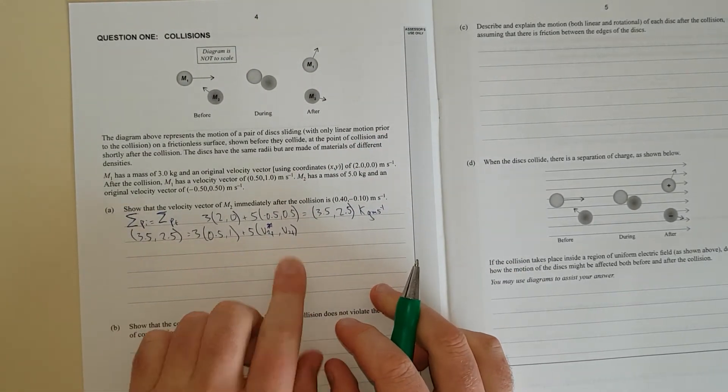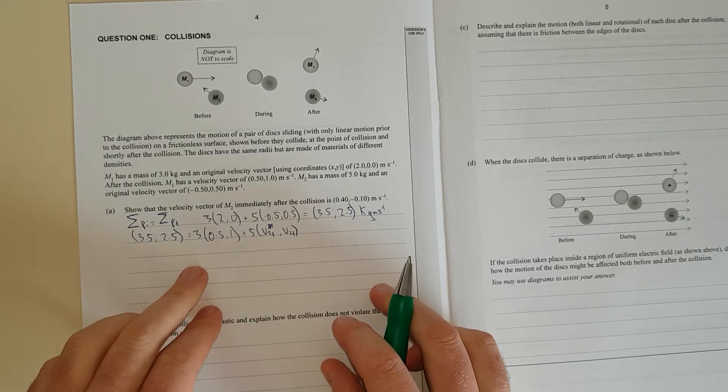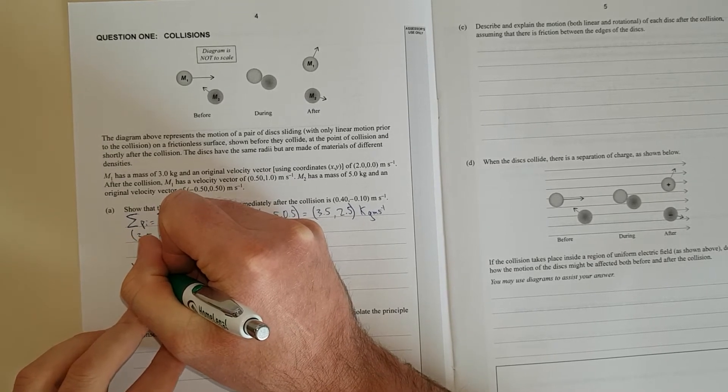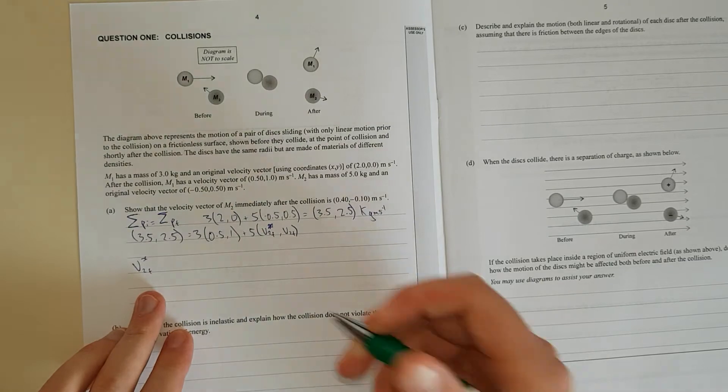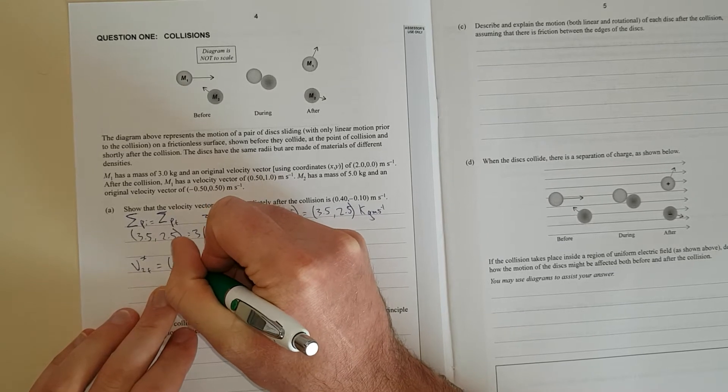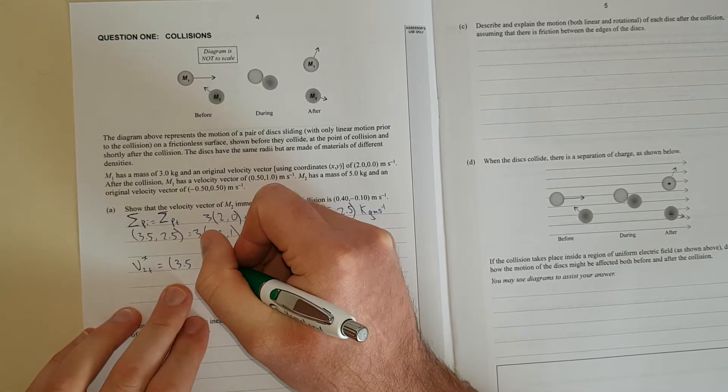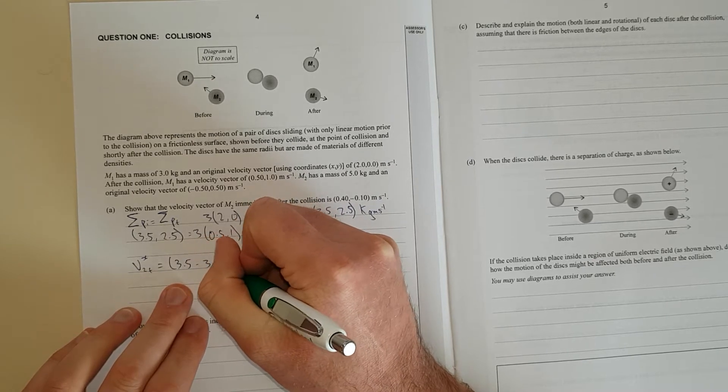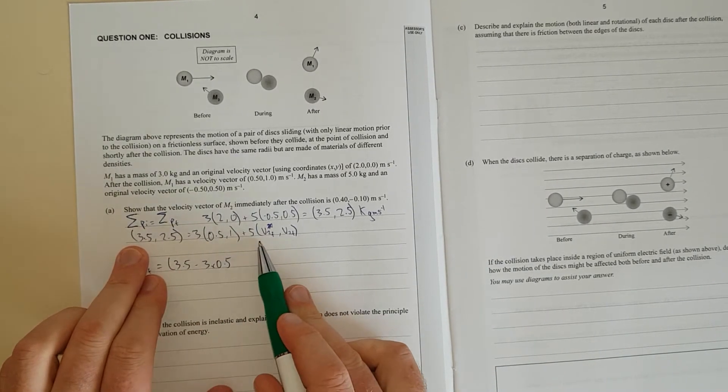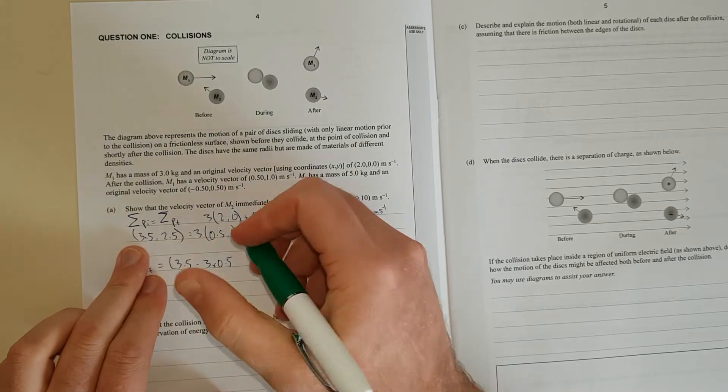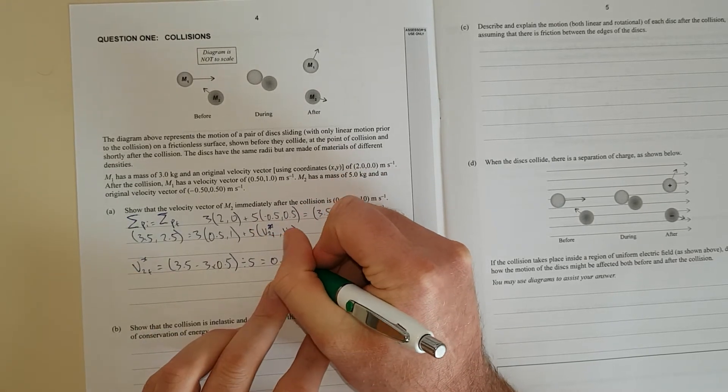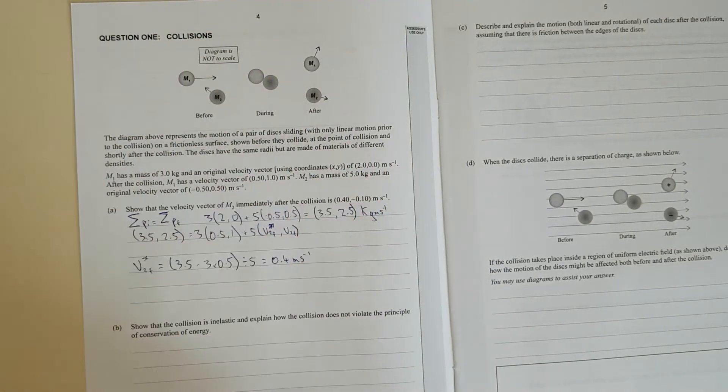Now we can see we've just got a simple linear equation that we can solve for terms. In other words, v2 final x equals 3.5 minus 3 times 0.5, and then eventually we divide by 5. So it's (3.5 − 1.5) divided by 5, should equal 0.4 metres per second. And if you do that in your calculator, it totally does.